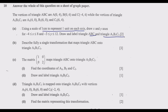Question B: describe fully a single transformation that maps triangle ABC onto triangle A1B1C1. Question C: the given matrix maps triangle ABC onto triangle A2B2C2 — find the coordinates of A2, B2, and C2, then draw and label triangle A2B2C2. Question D: triangle A1B1C1 is mapped onto triangle A3B3C3 with vertices A3(4,0), B3(6,0), C3(-2,4) — draw and label triangle A3B3C3 and find the matrix representing this transformation.